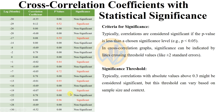There are two types of significance in the table: statistically non-significant and statistically significant values. Red-colored entries denote significant results. The criteria for significance: correlations are considered significant if the p-value is less than 0.05. In cross-correlation, significance is also indicated by lines crossing the threshold of plus or minus 2 standard errors. Typically, correlations with an absolute value above 0.3 are considered significant, though this threshold can vary based on sample size and context.